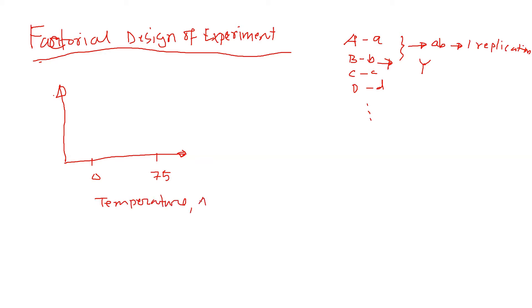Let's define that as factor A, and I've got two levels of A. Then I have humidity - for example, 0% humidity and 35% humidity. That is my factor B, which is humidity.